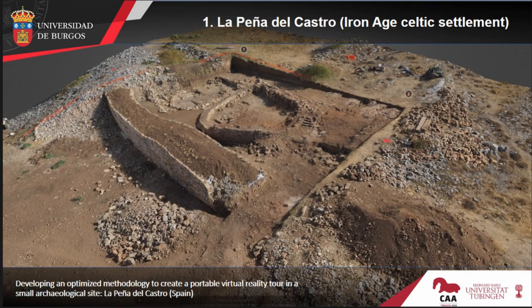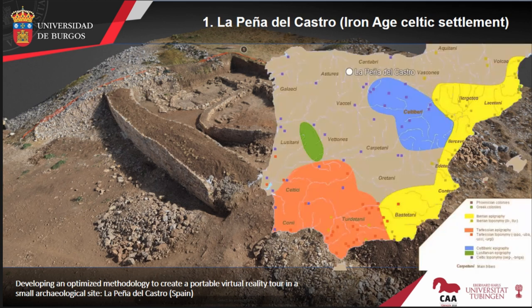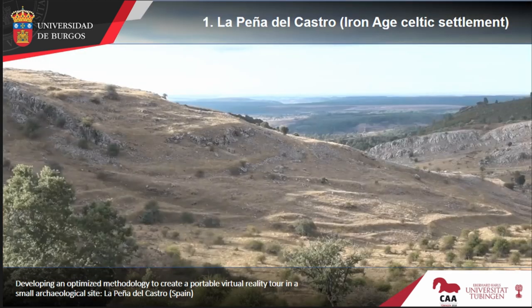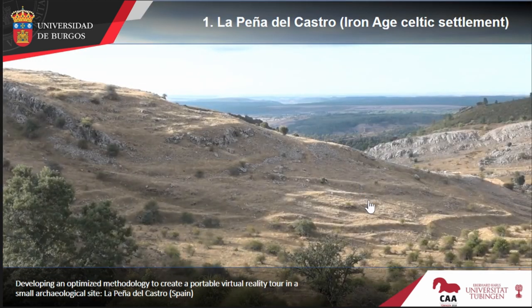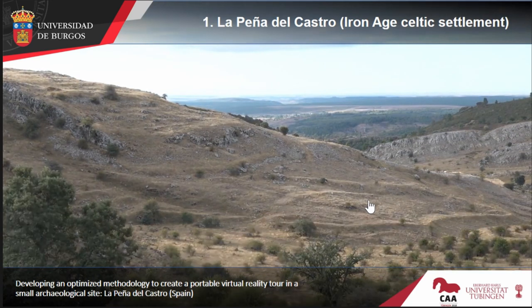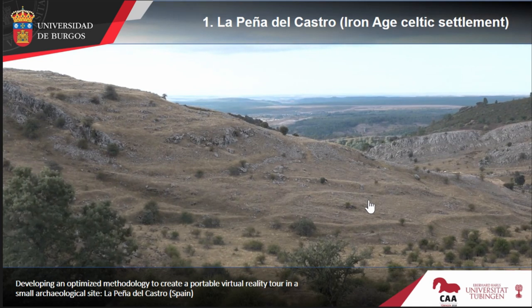We are talking about a project at La Peña del Castro in the north of Spain — a small archaeological project located just at the border of the first Roman invasion, between the Asturias and Cantabria peoples, called Varinense. This is a Celtic settlement of the Iron Age, situated over a hill. It's quite small compared to other settlements in the north of Spain, but quite important for its characteristics.